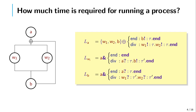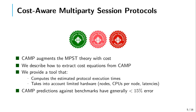The question that we ask in this work is: can we statically estimate the execution time required to run this protocol? In other words, given a set of processes that behave as described by these local types, can we predict how much time they will take to complete their part of the protocol, including dependencies, synchronization, and message latencies? To solve this problem we introduce cost-aware multiparty session protocols, or CAMP.